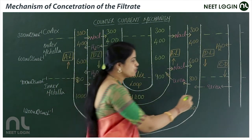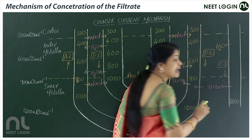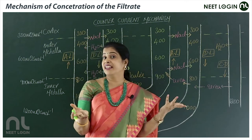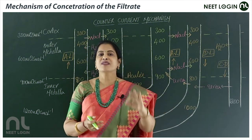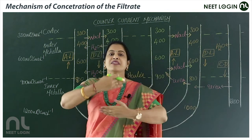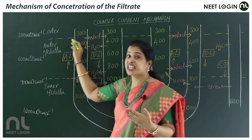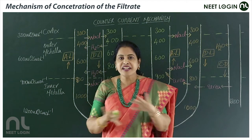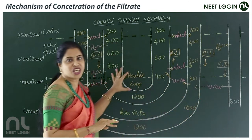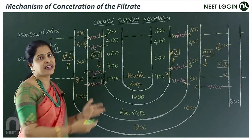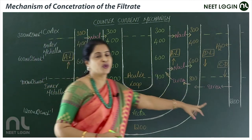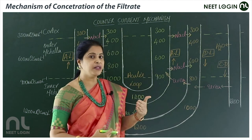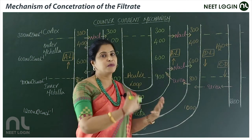This counter current flow and exchange multiplies the concentration — it is called the counter current multiplier. When the fluid finally reaches the collecting duct and passes through the renal pyramids into the pelvis and ureters, man excretes urine four times greater than the initial concentration: from 300 to 1200 milli-osmoles per liter. This is how hypertonic urine is produced — hypertonic to blood, which is only 300 milli-osmoles per liter.